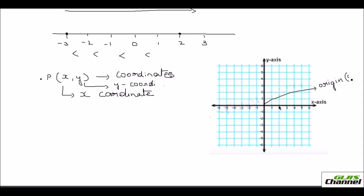At the origin, your x and y values are both zero, so it is written as (0, 0). On the x axis, to the right of zero you have all positive numbers — called x — and to the left all negative numbers, called x dash. On the vertical y axis, points above zero are positive — called y — and points below zero are negative, called y dash. This entire plane is your Cartesian plane, and you can represent any point on it.